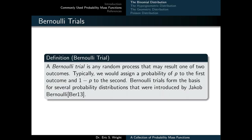We'll begin by introducing one of the simplest probability distributions: the Bernoulli trial. While we won't use the Bernoulli trial to compute probabilities directly, we'll find that it forms the foundation of two of the discrete probability distributions — two probability mass functions that we'll commonly work with, and several others. A Bernoulli trial is any random process that may result in one of two outcomes. Typically, we assign a probability of p to the first outcome and 1 minus p to the second. Bernoulli trials form the basis for several probability distributions introduced by Jacob Bernoulli.